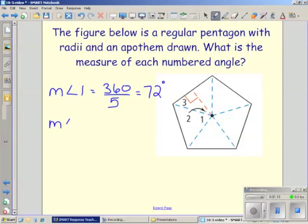The measurement of angle 2, if we can see angle 2 right here, that makes up half of angle 1. So half of angle 1 is equal to 36 degrees.